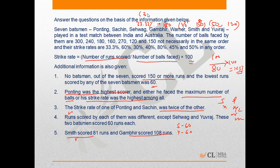There are two possible pairs of strike rates for Sachin and Ponting: 30 and 60, or 40 and 80. These are the possible pairs of strike rates for Sachin and Ponting.